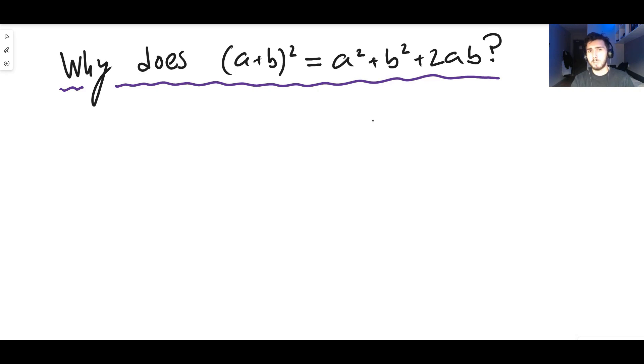Why is it not just a² + b²? Where does this 2ab come from exactly? And that's what we're going to do in this video.